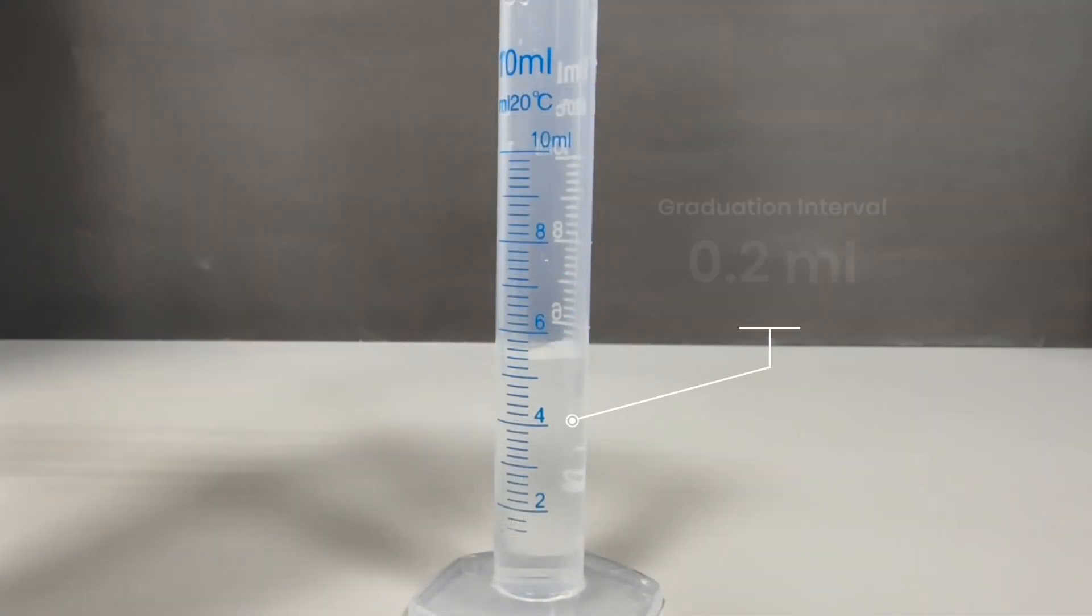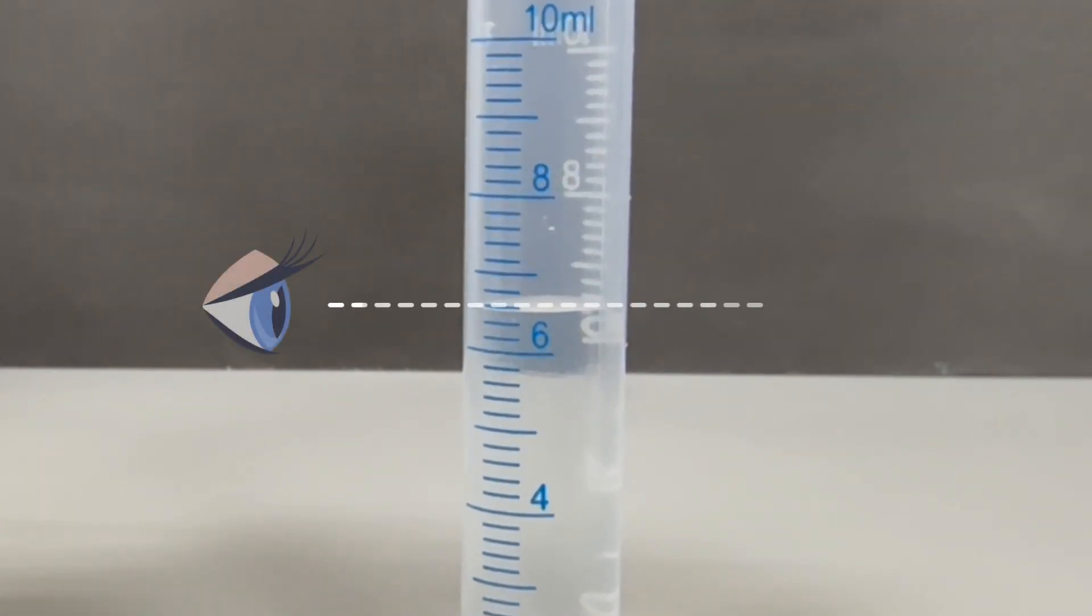The measuring cylinder has graduations every 0.2 milliliters. When reading the cylinder, please make sure that it is perfectly vertical and at eye level.